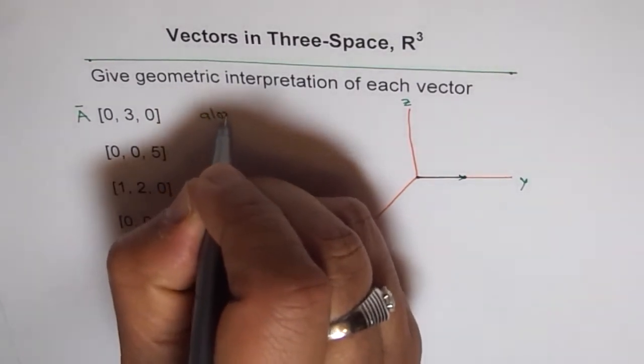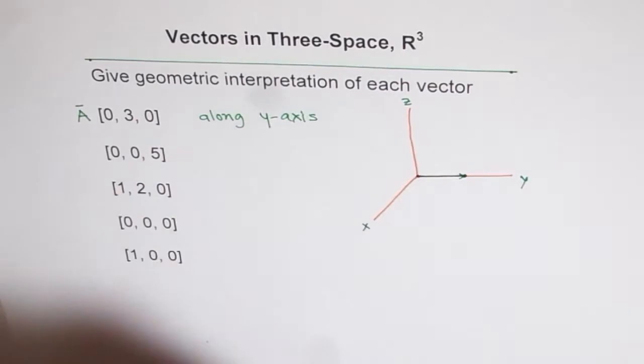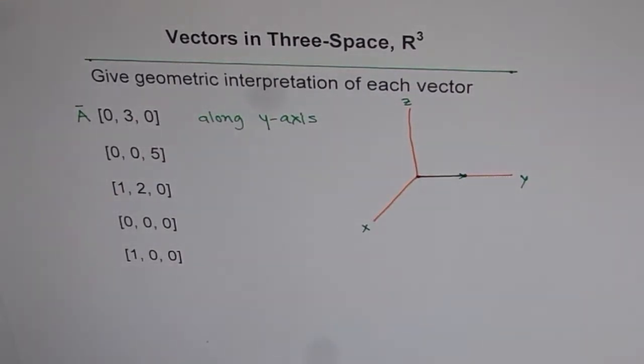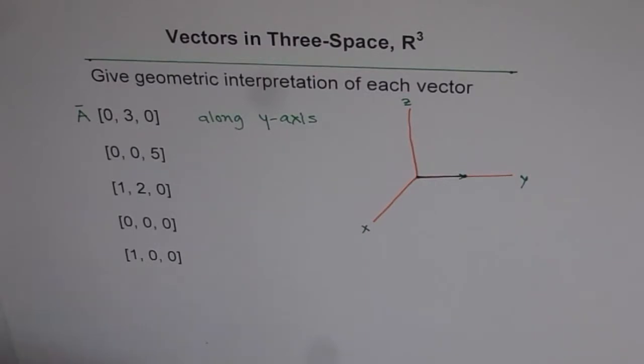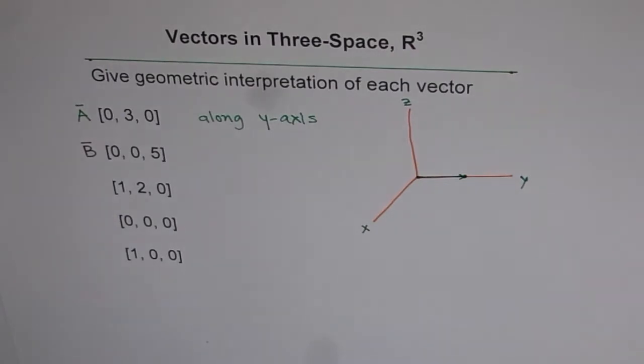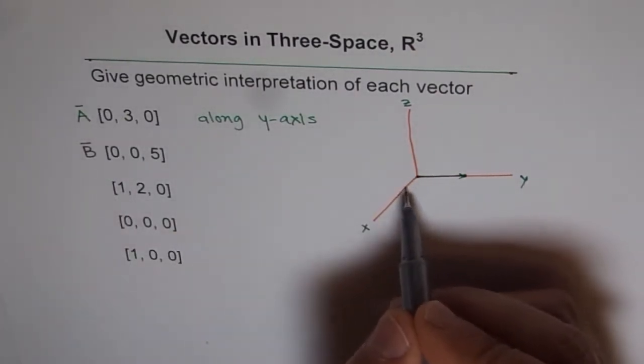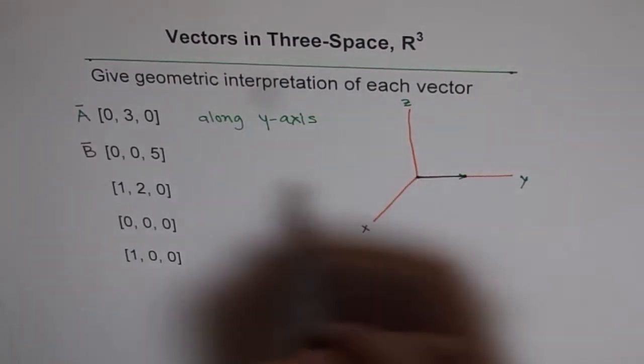Let's look into the next one, which is (0, 0, 5). Let's give it a name B. B is (0, 0, 5), that means we do not move towards x or y, but we do move five units towards z.